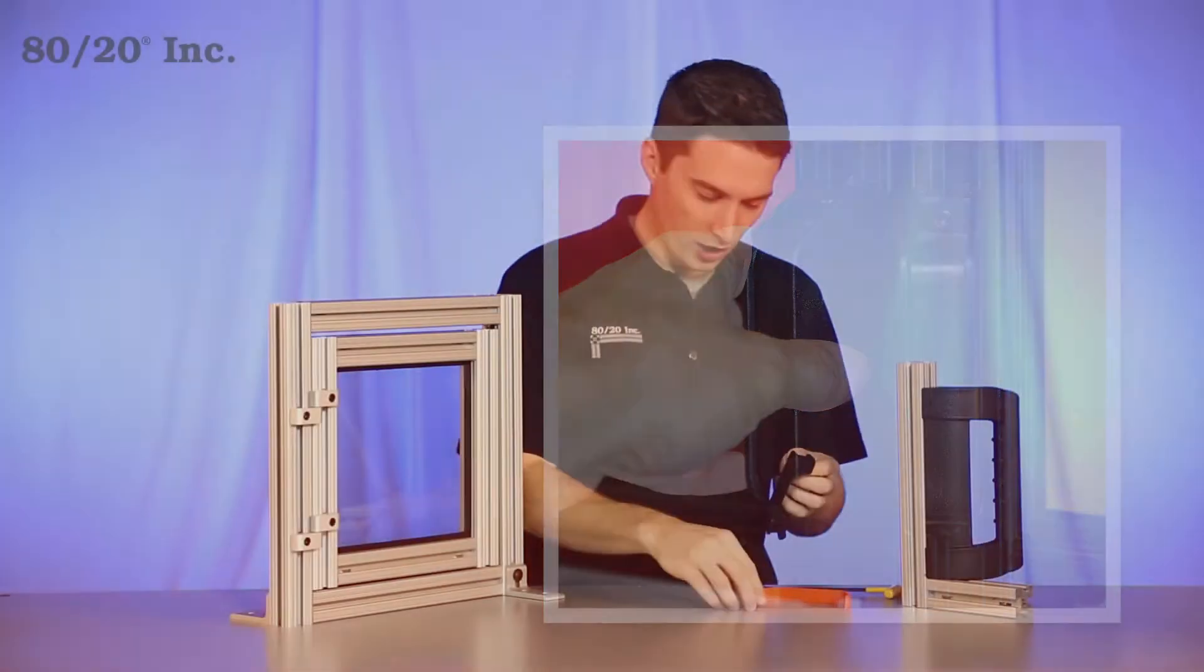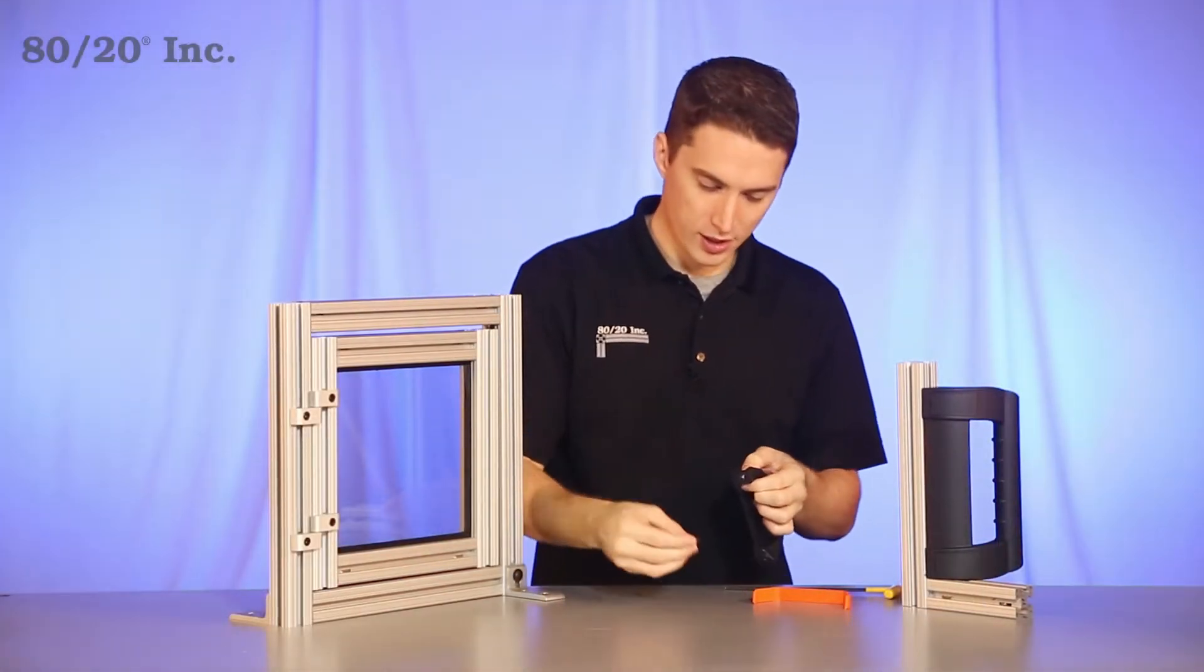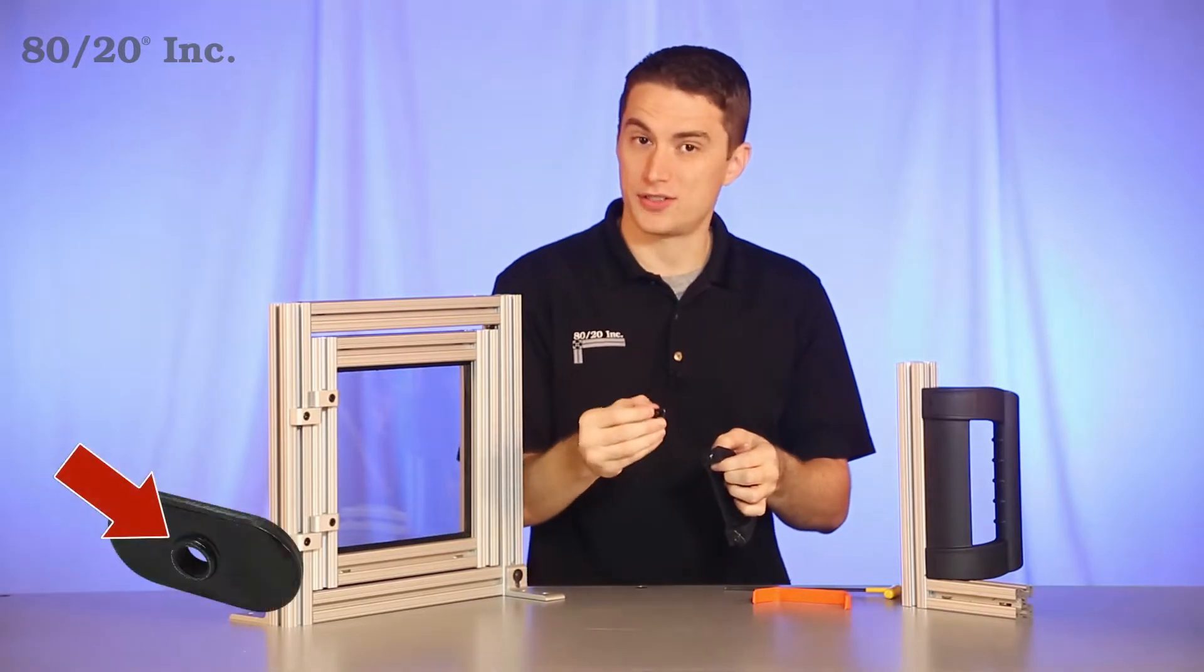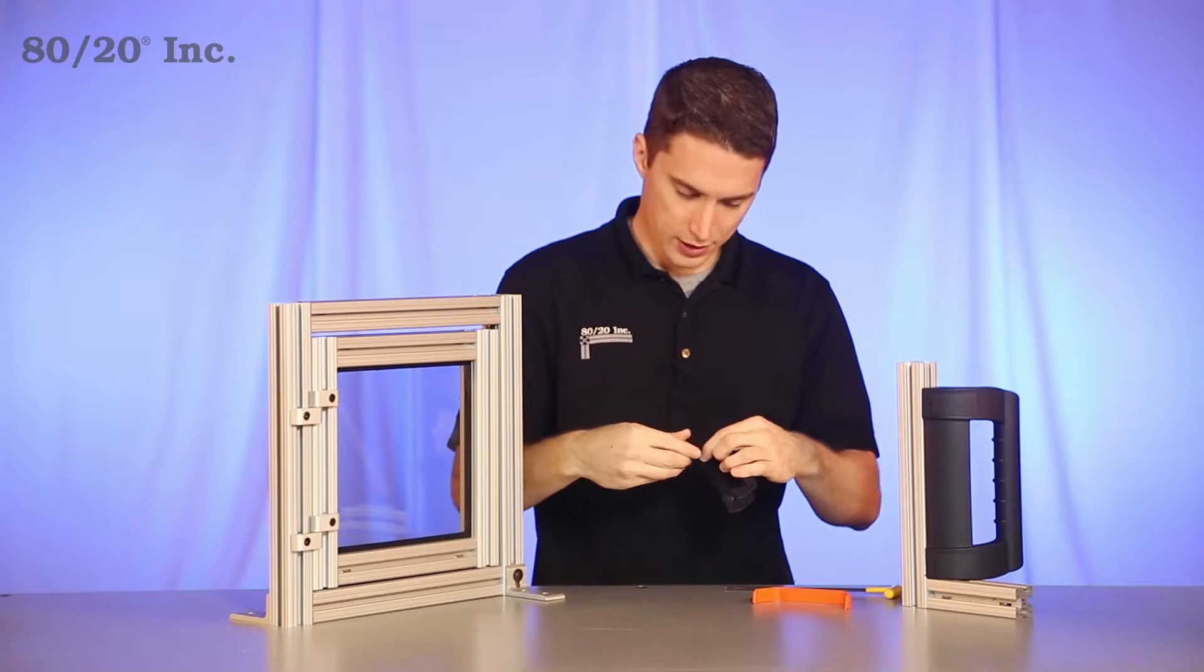So to get started, we're going to take our handle, put a bolt through it, and put a T-nut on it. You're going to want to make sure that the pilot projection on the T-nut is facing downwards or away from the handle. Get that on there.